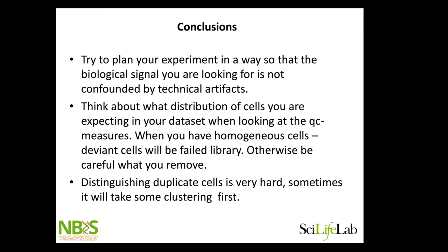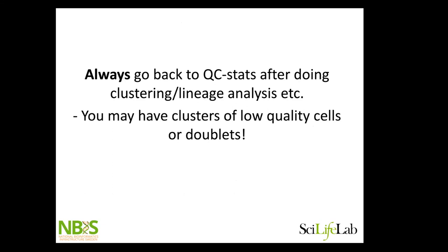And finally, keep quality control in mind throughout all of your analysis. Once you've done your UMAP, plot your QC stats onto it. Once you've done your clustering, check that clusters with clearly different numbers of genes or clearly different mitochondrial content — ask yourself: is this biological or is it technical? All the way, as you do your analysis, use the QC stats to go back and make sure you didn't include technical artifacts in your conclusions.